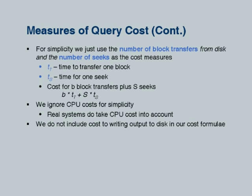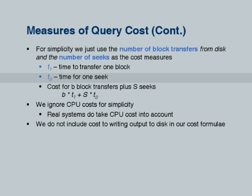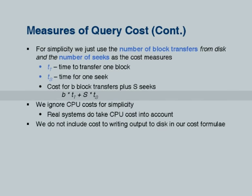Some notation: we use T_T as the time to transfer one block. For simplicity we treat reads and writes as being the same. T_S is the time for one seek. So if you have B block transfers plus S seeks, the total time is B times T_T plus S times T_S. This is the sort of equation we will be using throughout.